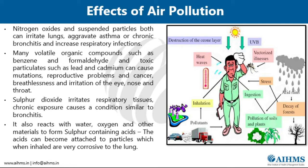Sulfur dioxide is another harmful gas emitted from fossil fuel consumption and industrial activities. The acceptable level should be 0.03 ppm; if it exceeds this, it can affect human, animal, and plant life. Sulfuric acid particles can be corrosive to the lungs, causing respiratory irritation, bronchitis, mucous production, and bronchospasm. It can also interact with sensory receptors, causing constriction.